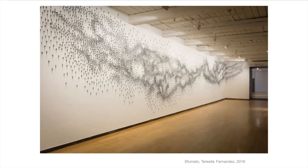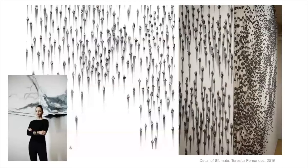This piece is by Teresita Fernandez and it's called Sumado. Fernandez is a Cuban-American artist living in New York, born to parents who were in exile from Cuba. This is made out of little tiny pieces of graphite fragments and she's made sort of a constellation. She's embedded them into the wall, and since graphite is like pencil lead, it makes a smear mark on the wall with a little trail. When you look at the whole thing, it's like a big constellation.